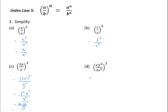In this last example we have xy cubed divided by 3z squared, all squared. So the power of 2 applies to the xy cubed in the numerator and the 3z squared in the denominator, which would be x squared, y to the 3 times 2 or y to the 6, over 3 squared and z to the 2 times 2 or z to the power of 4. We can simplify this further and get x squared y to the power of 6 over 9z to the power of 4.